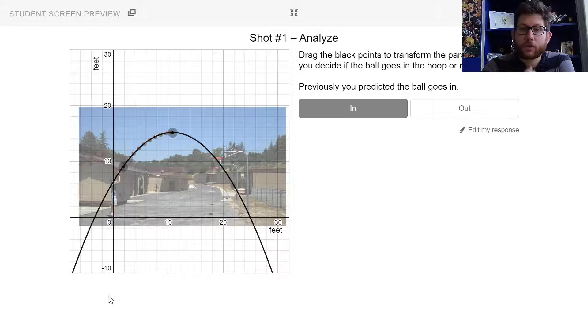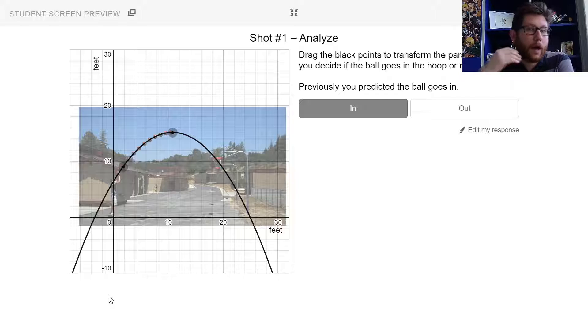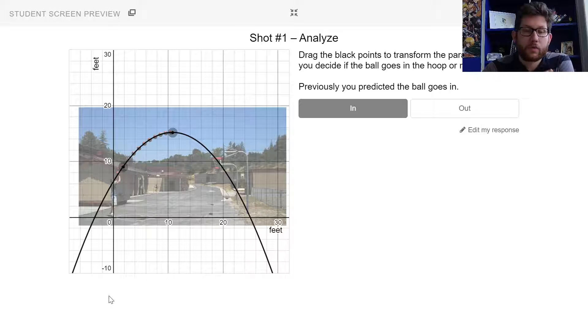Then at the end it will show you each of them, show you if you're right or wrong, and it'll give you a graph of how many you got right, how many you got wrong. And at the very end they're going to talk a little bit about quadratic equations.